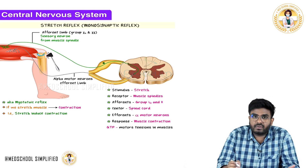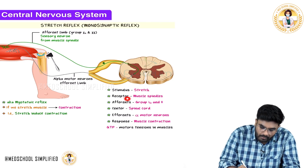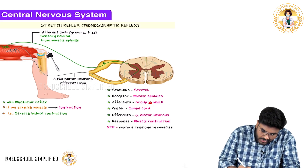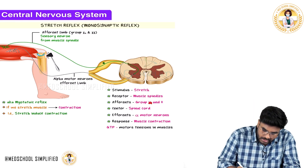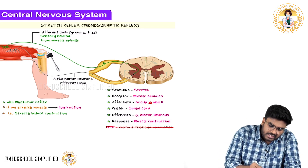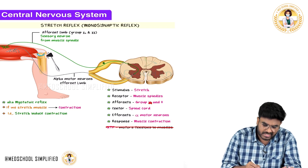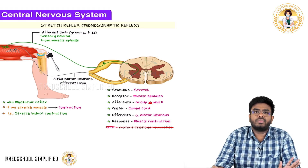In your exam, they will ask: in stretch reflex, what are the receptor, afferents, center, efferents, and response? The stimulus is stretching. The receptor detecting the stretch is muscle spindles. The afferent fibers are group 1a and 2 fibers. The center is the spinal cord. The efferents are alpha motor neurons, which go to extrafusal fibers causing contraction. The response is muscle contraction. This stretch reflex is also called the myotactic reflex — stretch-induced contraction.